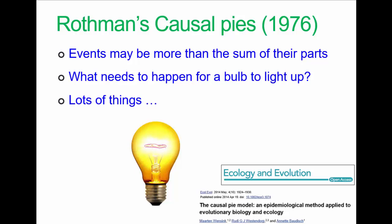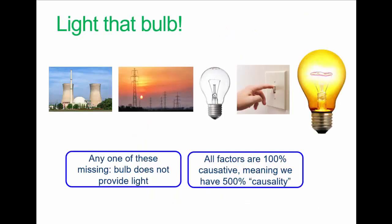As the linked paper says, life is all about cause and effect. Here's a classic example: the lights at home shine because they each have a light bulb, the switches are on, there's a power grid, there's a power source. If you take any of these factors away, there is no light. The system is said to contain 500% causality — all five factors are 100% causative for the shining of the light. There is no limit to the causes of some outcome, which is an interesting insight, particularly when related to disease.